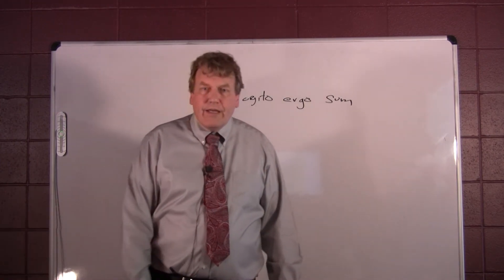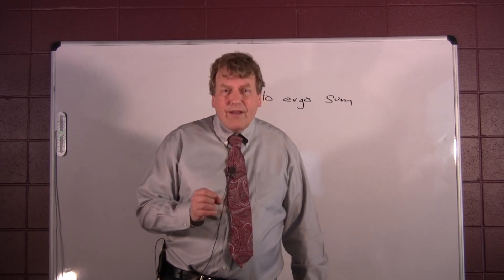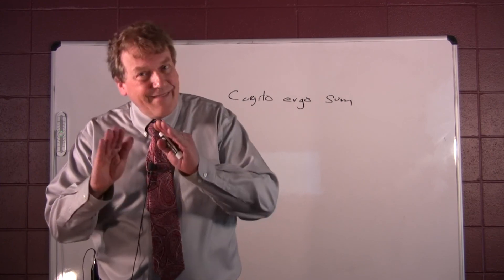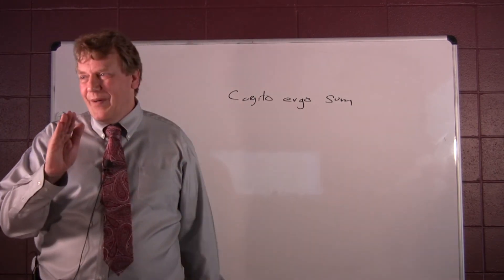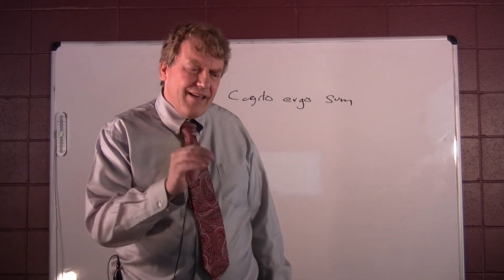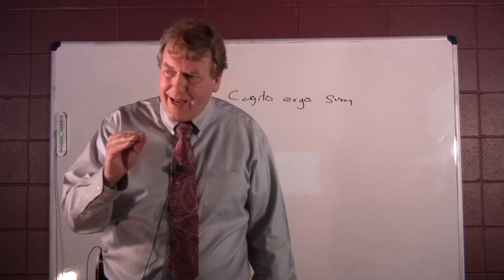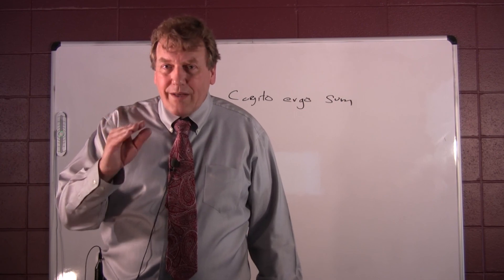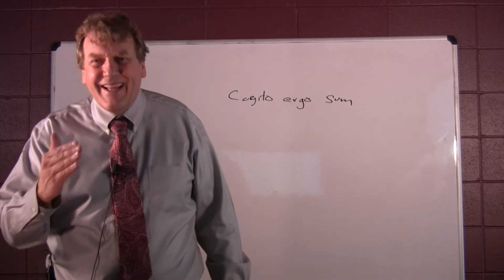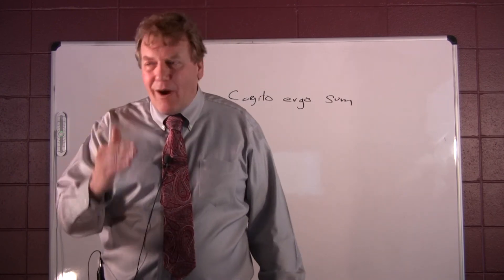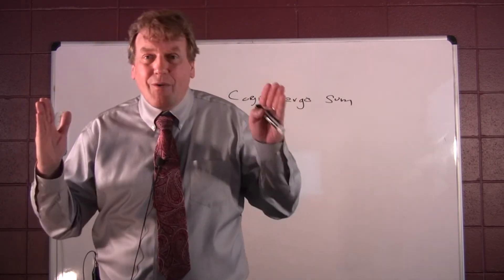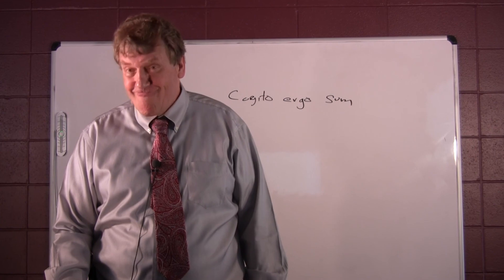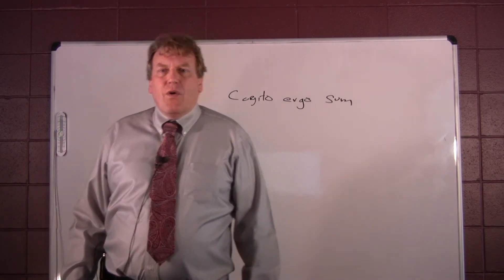He claims that we can know that something is clear and distinct if we cannot doubt it. With Descartes, doubt has to do with the will. The will is always in service of the intellect. If one is convicted by the intellect, one's will goes along with it. If one cannot doubt it, if one cannot through willpower doubt it, then the thing is clear and distinct, and it is true.